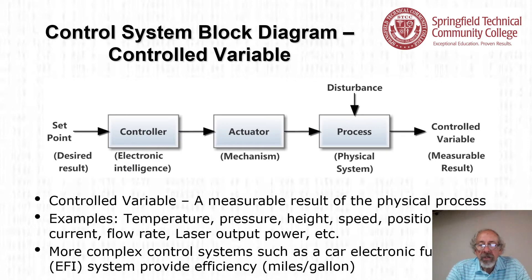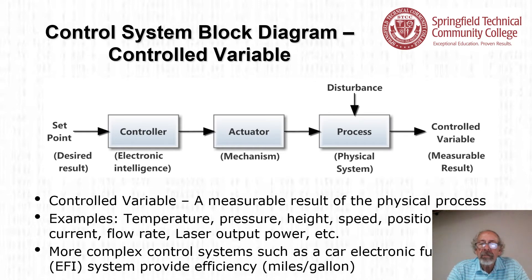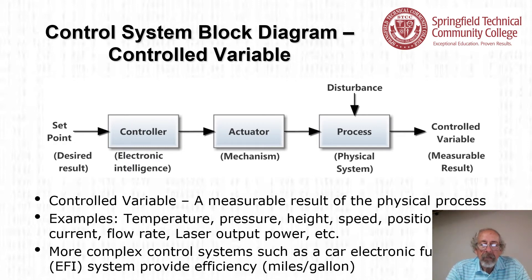The control variable is a measurable result of the physical process. Examples include temperature, pressure, height, speed, position, voltage, current, flow rate, and laser output power — essentially anything measurable can be the control variable. In more complex control systems such as a car's electronic fuel injection system — an EFI system — it might provide an efficiency number like miles per gallon.